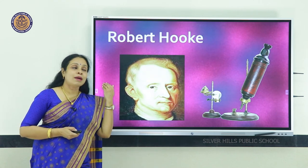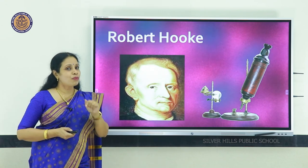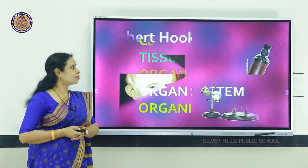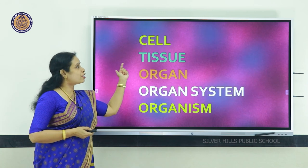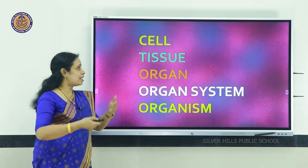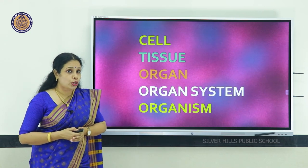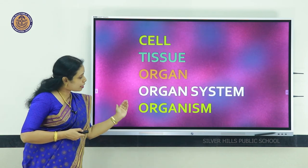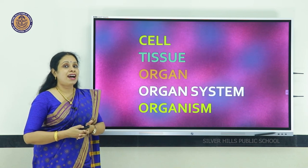He called them cellular — that was when somebody viewed a cell for the first time. Cells join together to form tissue, the next higher level is organ, and many different organs join together to form an organ system, ultimately forming an organism. This is the hierarchy.